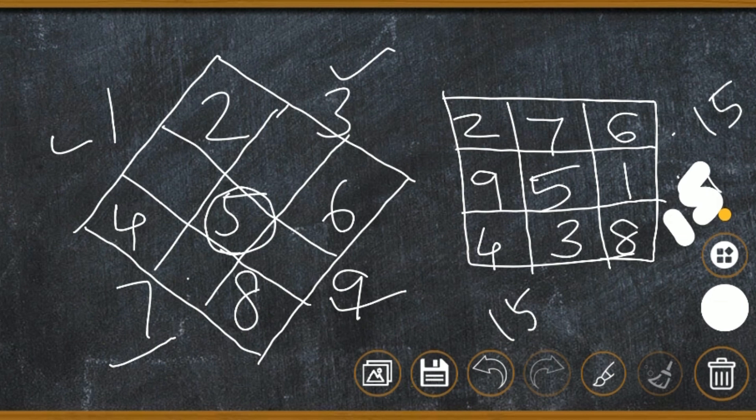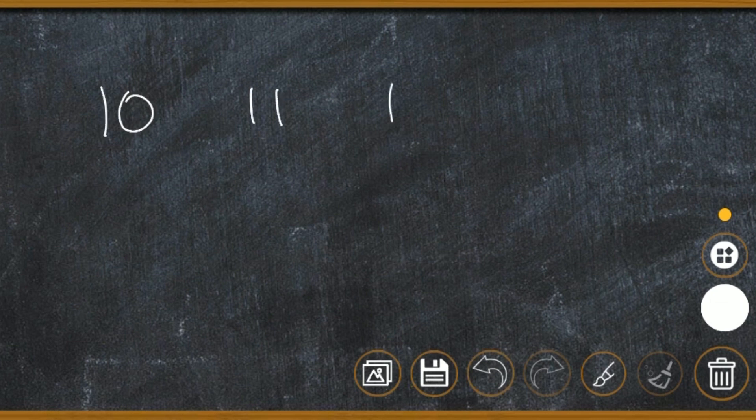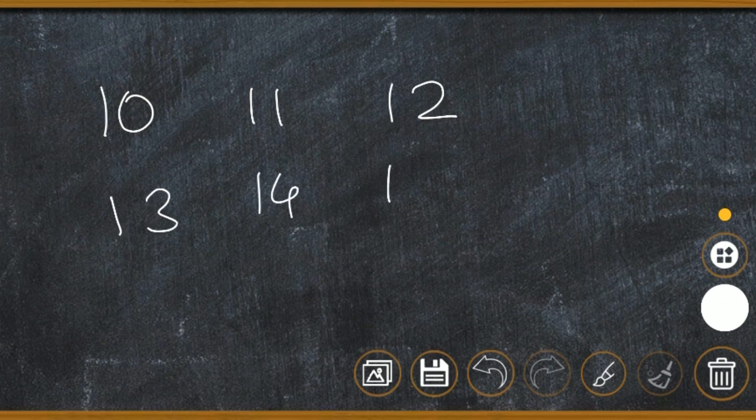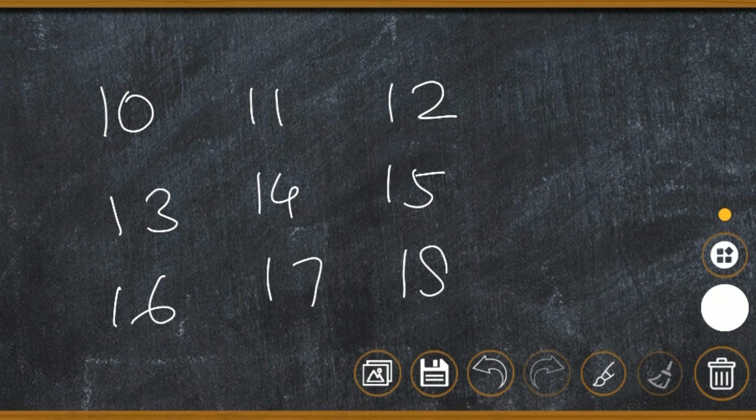Did you understand how to make a magic square? Let us take another example, one more example. Look here, I am going to write the numbers 10, 11, 12, 13, 14, 15, 16, 17, and 18. Let us draw the lines.